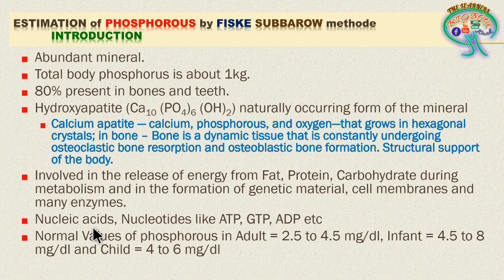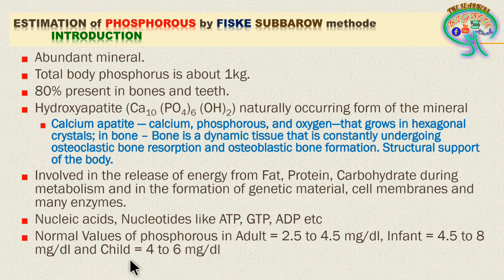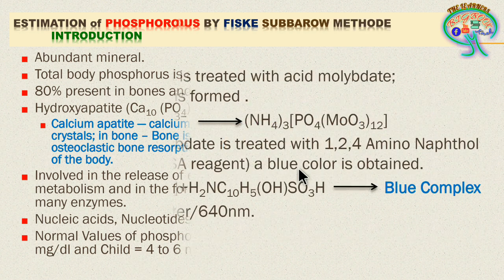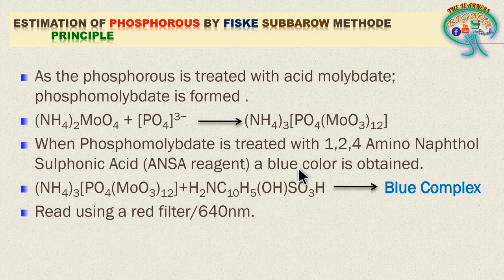The normal values of phosphorus in adults are 2.5 to 4.5 milligrams per deciliter. Infants have 4.5 to 8 milligrams per deciliter, and children have 4 to 6 milligrams per deciliter.